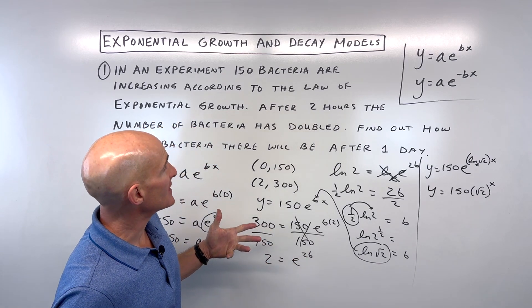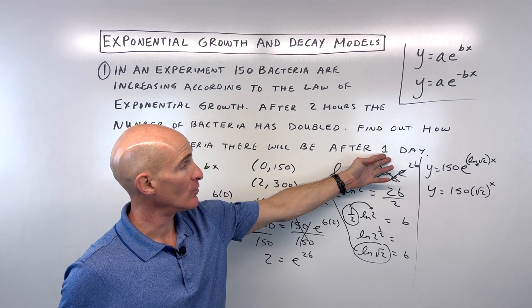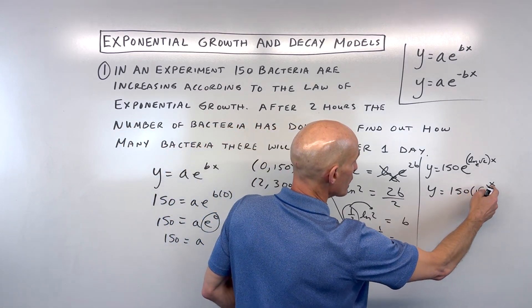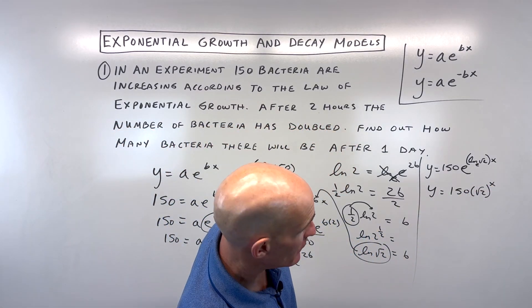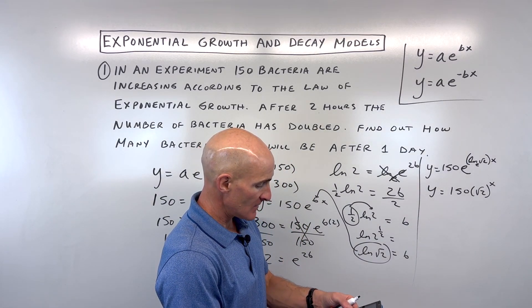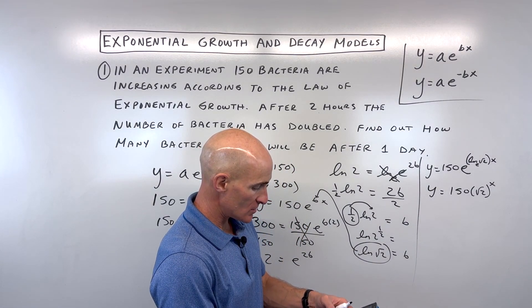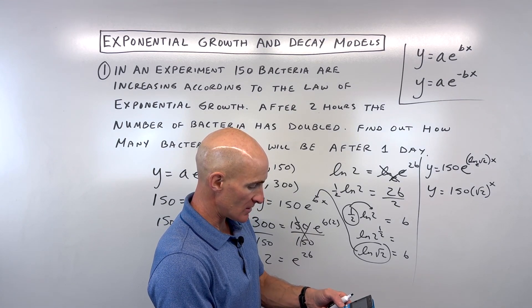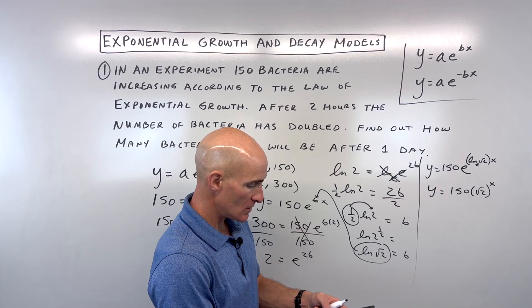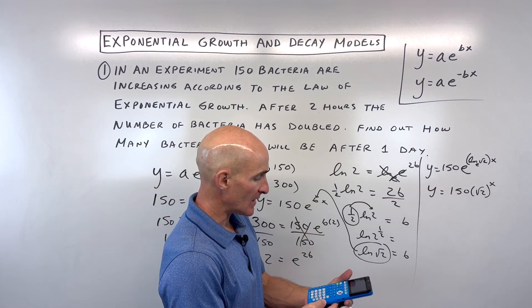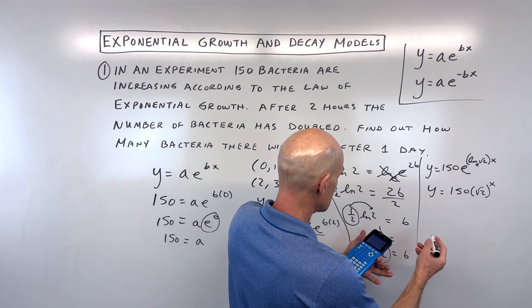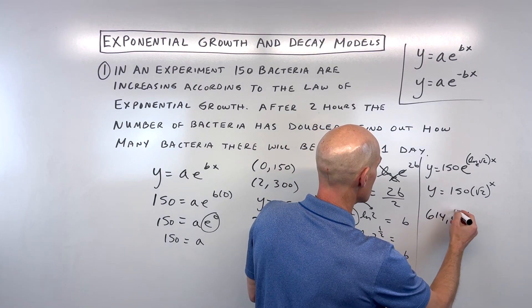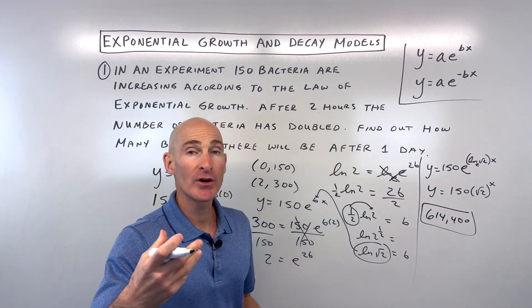But we're interested in how many bacteria there will be after one day. That's 24 hours, not 2 hours. So if we put 24 in for x, we get 150 times the square root of 2 to the 24th. I'm getting 614,400 bacteria. Let's take a look at another example.